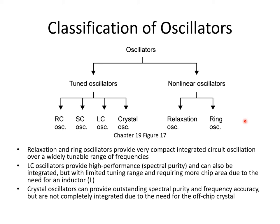They're quite popular for integrated circuit implementations. Among tuned oscillators, LC oscillators can provide high performance — that is, very good spectral purity — and can also be integrated into a pretty small area, but have limited tuning range and do require more area than nonlinear oscillators due to the need for an inductor to produce resonance. Crystal oscillators are also very common and important circuits on integrated circuits because they can provide outstanding spectral purity and frequency accuracy. But unfortunately, they can't be completely integrated because they need an off-chip crystal to determine the oscillating frequency. In this video, we'll focus on two of the most common integrated circuit oscillators: the ring oscillator and the LC oscillator.